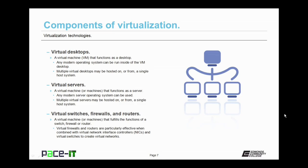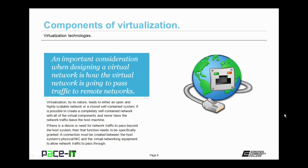There are then virtual switches, firewalls, and routers — virtual machines that fulfill the functions of the switch, firewall, and router. Virtual firewalls and routers are particularly effective when they are combined with virtual network interface controllers, or virtual NICs, and virtual switches to create virtual networks.